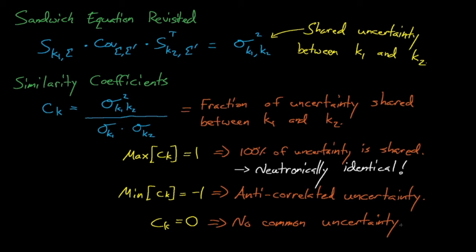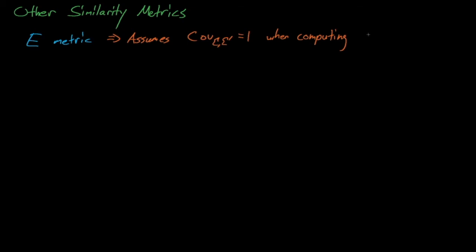We don't always need to trend on c-sub-k though, and there are a number of other sensitivity-based metrics that we could trend on. The E metric, for example, computes sensitivity coefficients by assuming that the covariance between each cross-section equals one. In other words, this metric simply computes the overlap of these sensitivity coefficients without weighting them by the uncertainty in the covariance data. Essentially, it computes a dot product for the sensitivity coefficients.